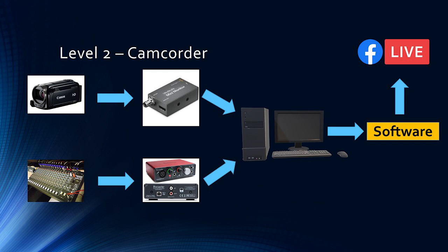We're going to take the output from your soundboard and get our audio separately from the mix on the soundboard. We're going to go to what we call an audio interface, which is going to take that quarter-inch to XLR signal into our audio interface. Our audio interface is going to interpret that for our computer and take it in via USB. The computer needs to have at least an i5 processor and about eight gigs of RAM.